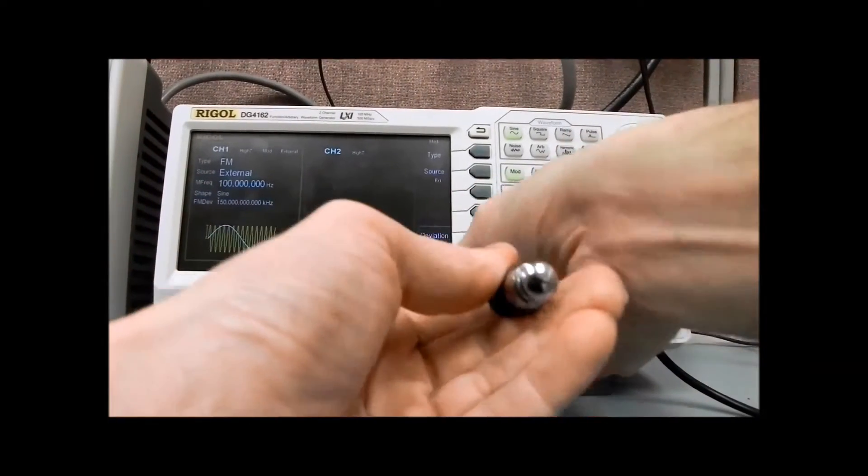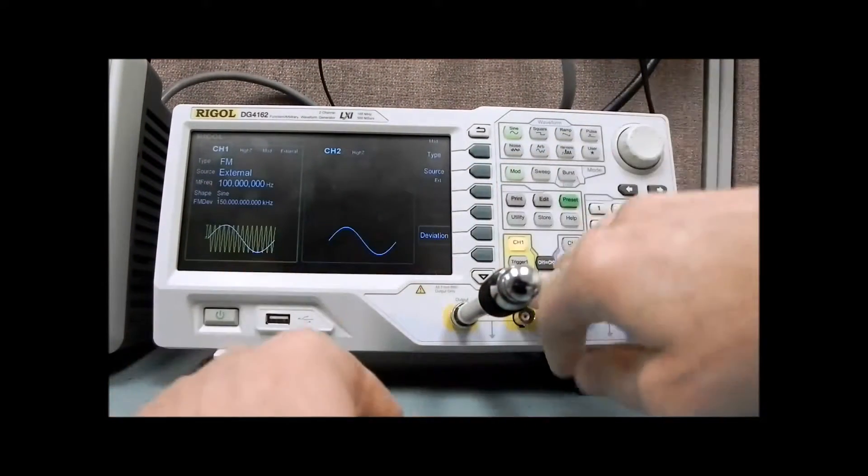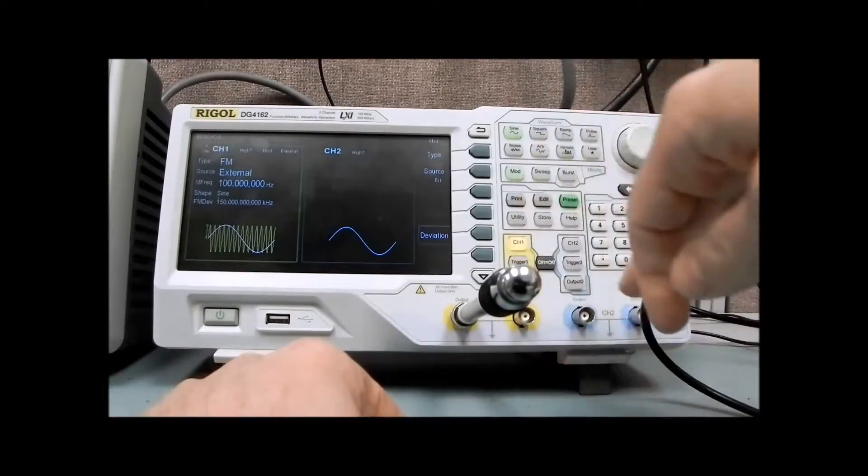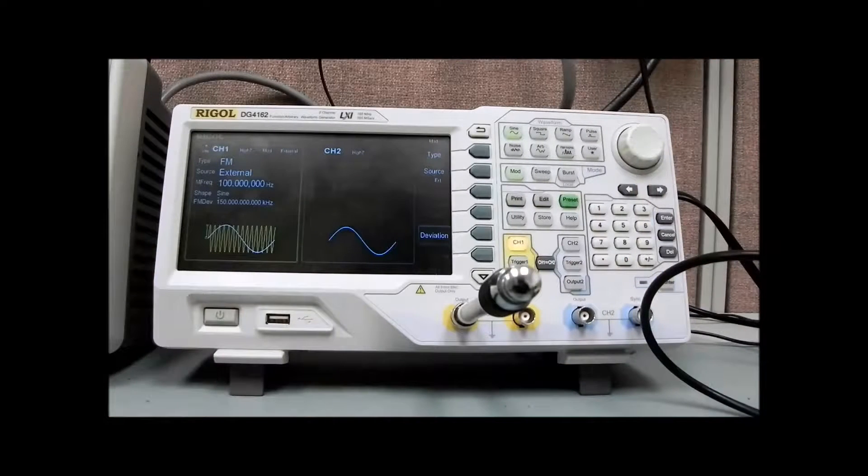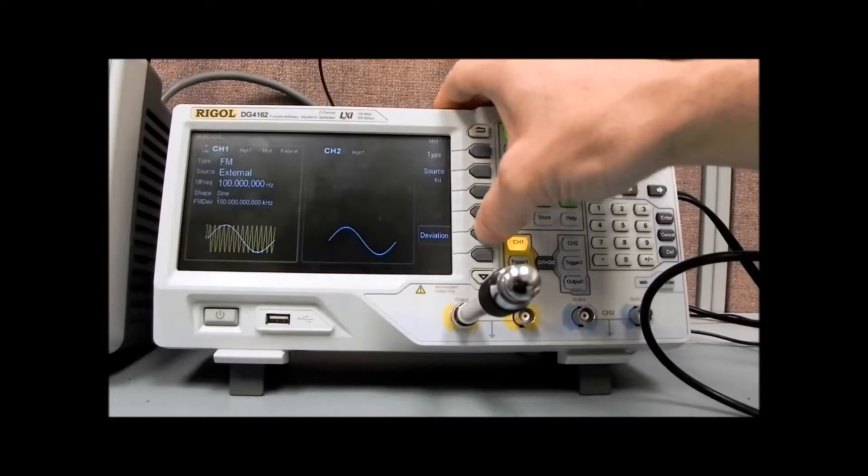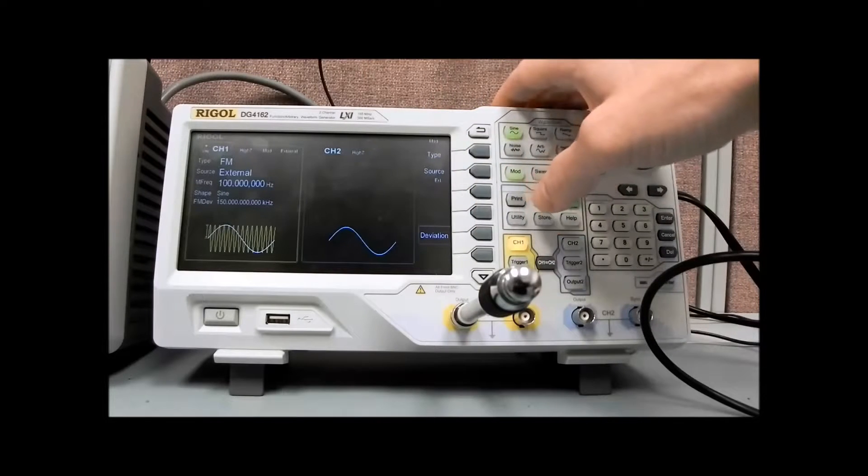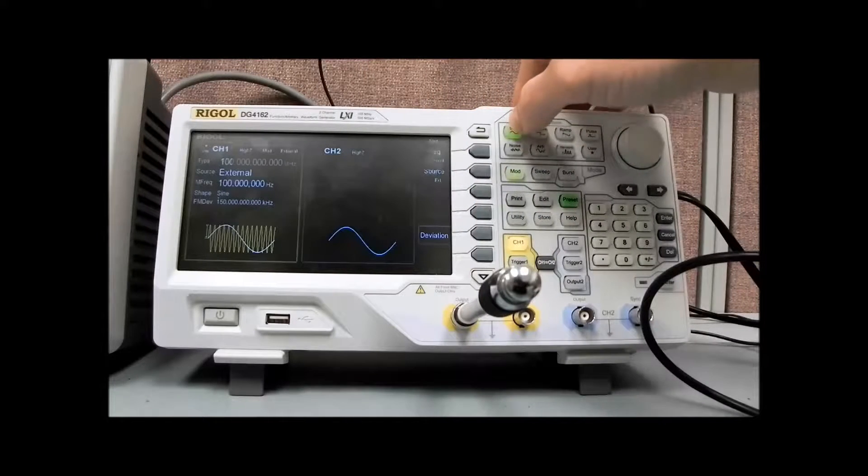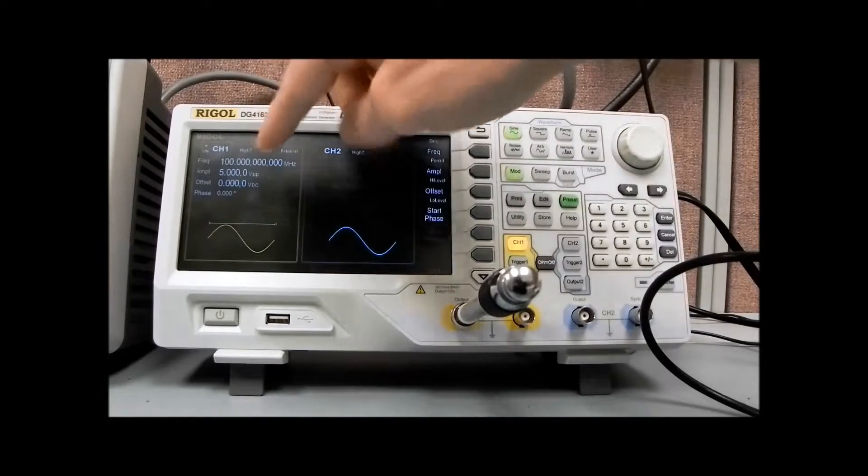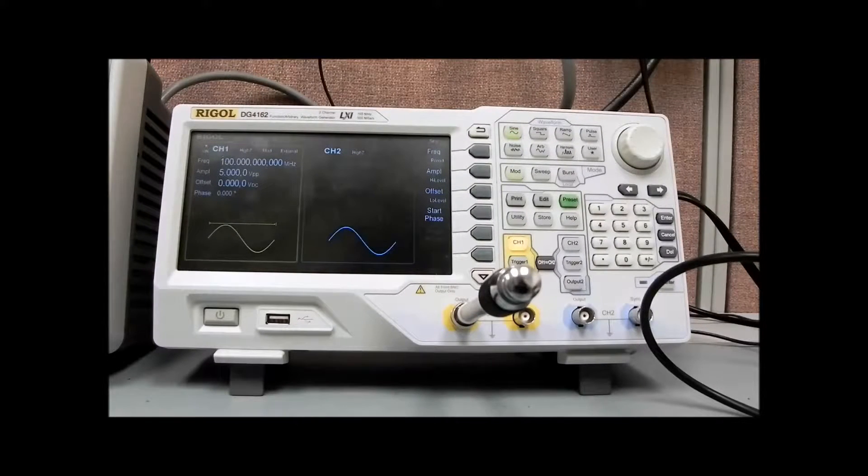I'm going to connect an antenna, and then I can enable the output. And now, what we can do, let's take a look here. The deviation, 150 kHz. And sine, 100 MHz. And our amplitude is 5 volts. We should be okay there.